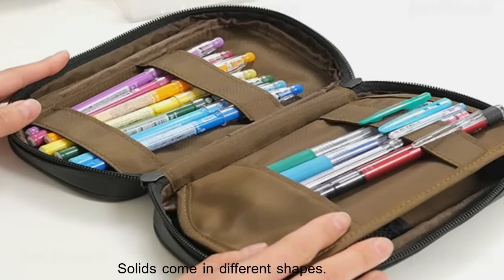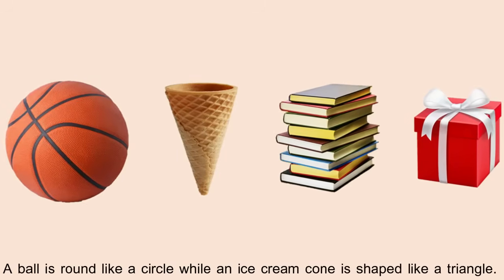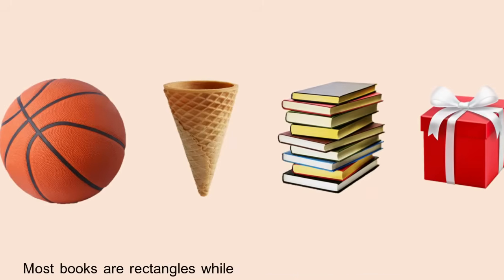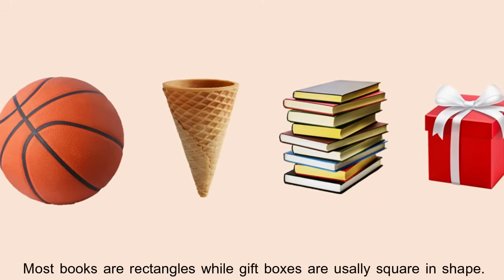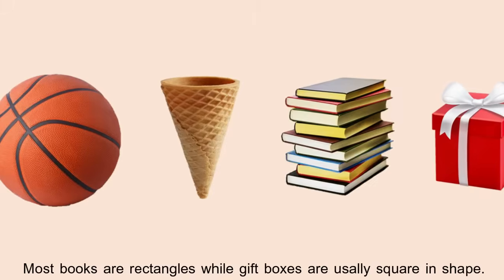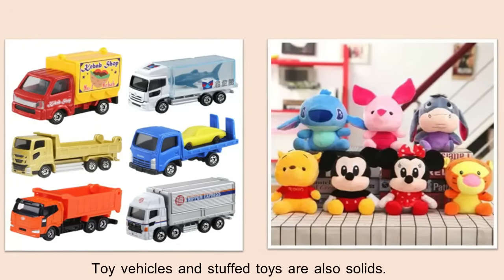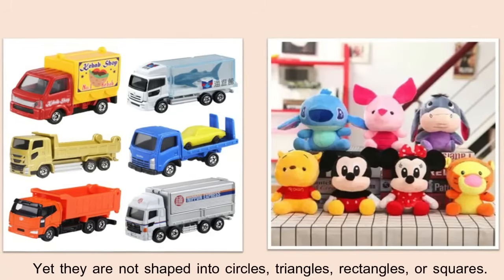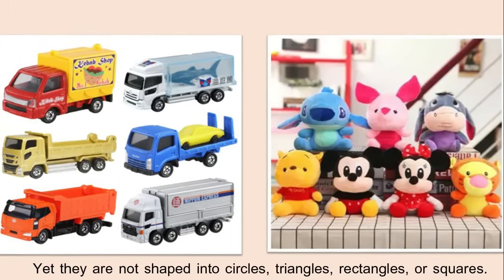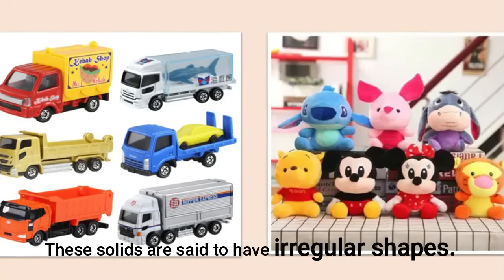Solids come in different shapes. A ball is round like a circle while an ice cream cone is shaped like a triangle. Most books are rectangles while gift boxes are usually square in shape. Toy vehicles and stuffed toys are also solids, yet they are not shaped into circles, triangles, rectangles, or squares. These solids are said to have irregular shapes.